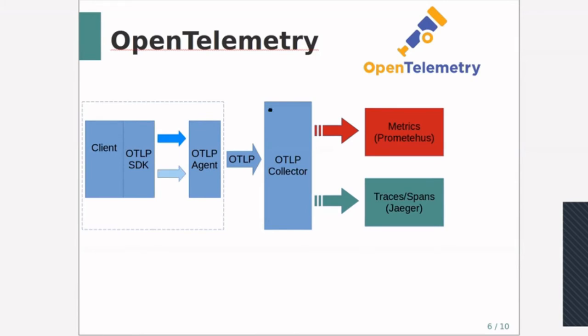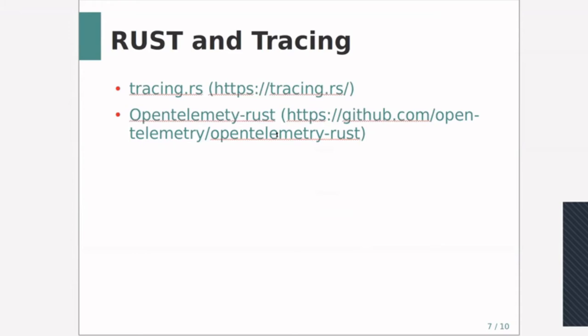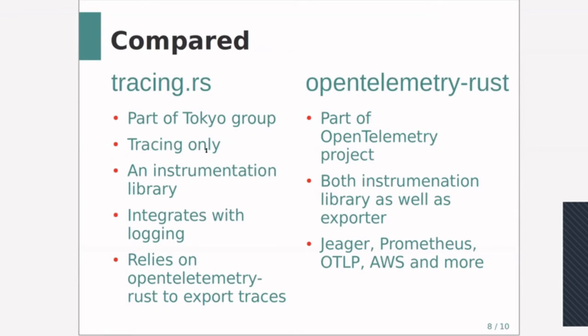In terms of Rust and tracing, there are two different approaches and groups: tracing and metrics.rs, and OpenTelemetry Rust. Tracing is part of the Tokio group - one of the leading groups behind Hyper, Tokio, Tonic, and other libraries. Tracing only does tracing - you can collect spans, it's an instrumentation library - but it also integrates very well with logging. Instead of using a standard logger, you can use a tracing logger.